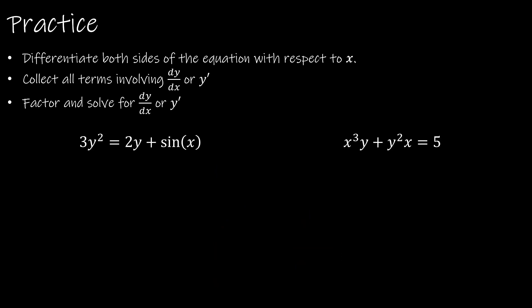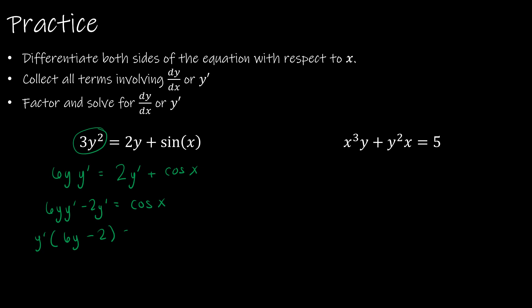Here are two questions to try. Starting with the first: the derivative of 3y squared, differentiating with respect to x, gives 6y times y prime. Then 2y becomes 2, but chain rule adds y prime. The derivative of sine x is cosine x. Collecting terms: 6y y prime minus 2y prime equals cosine x. Factor out y prime to get y prime times (6y minus 2). Divide to get y prime equals cosine x divided by (6y minus 2).